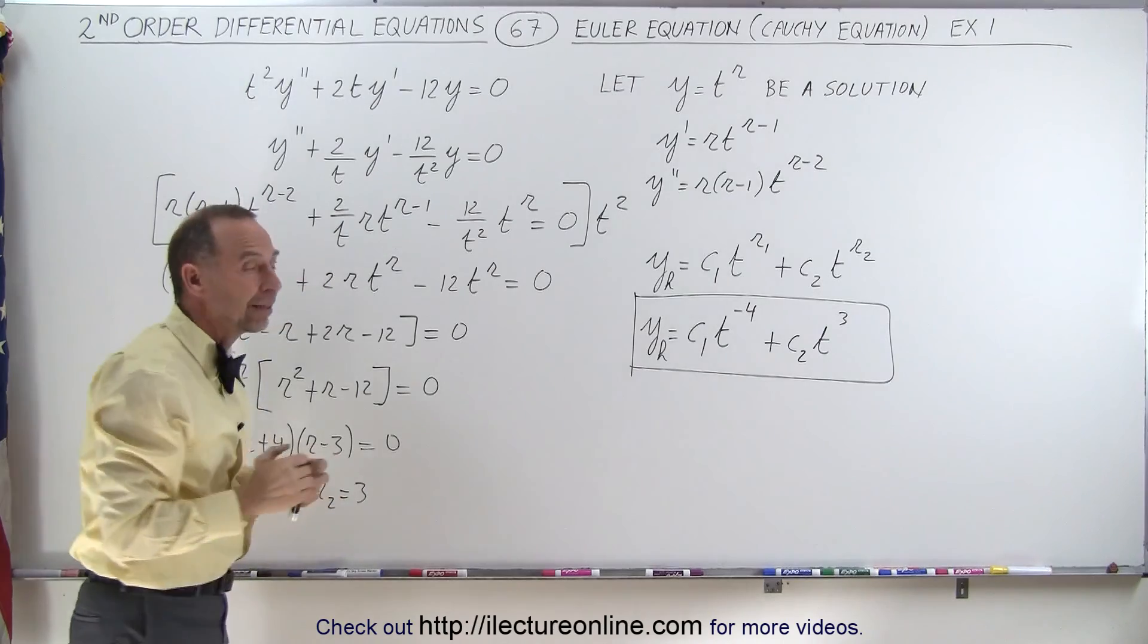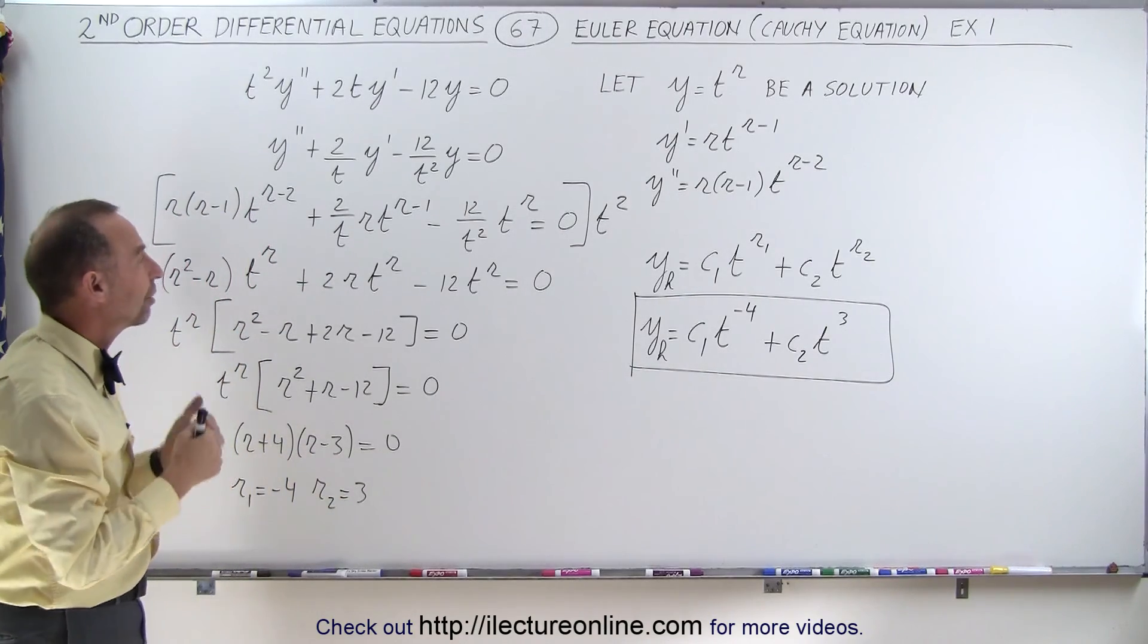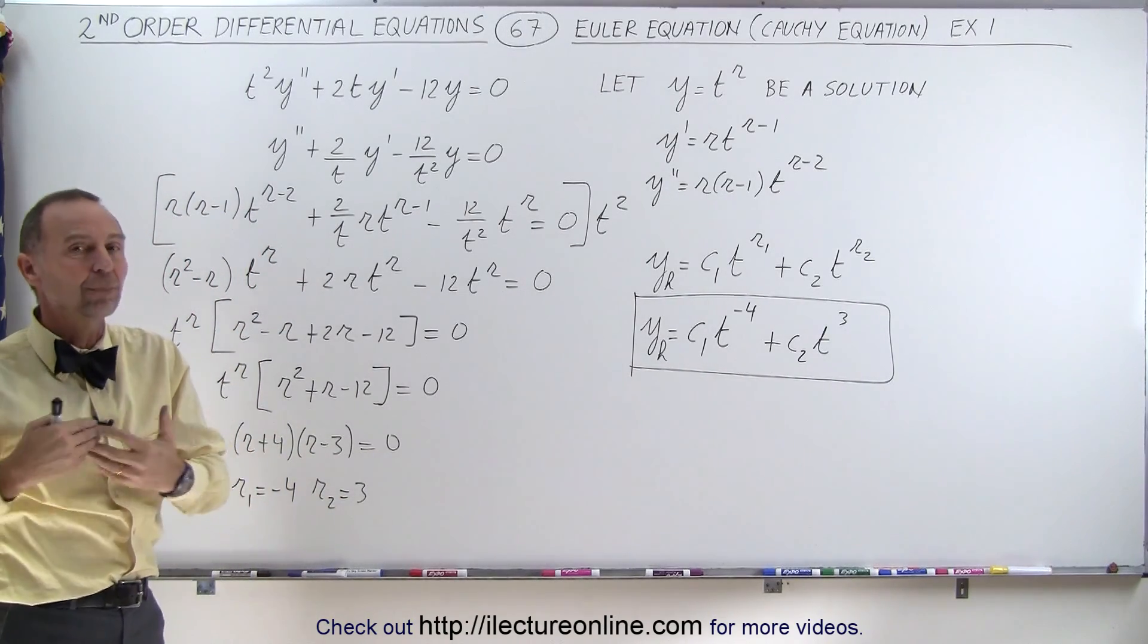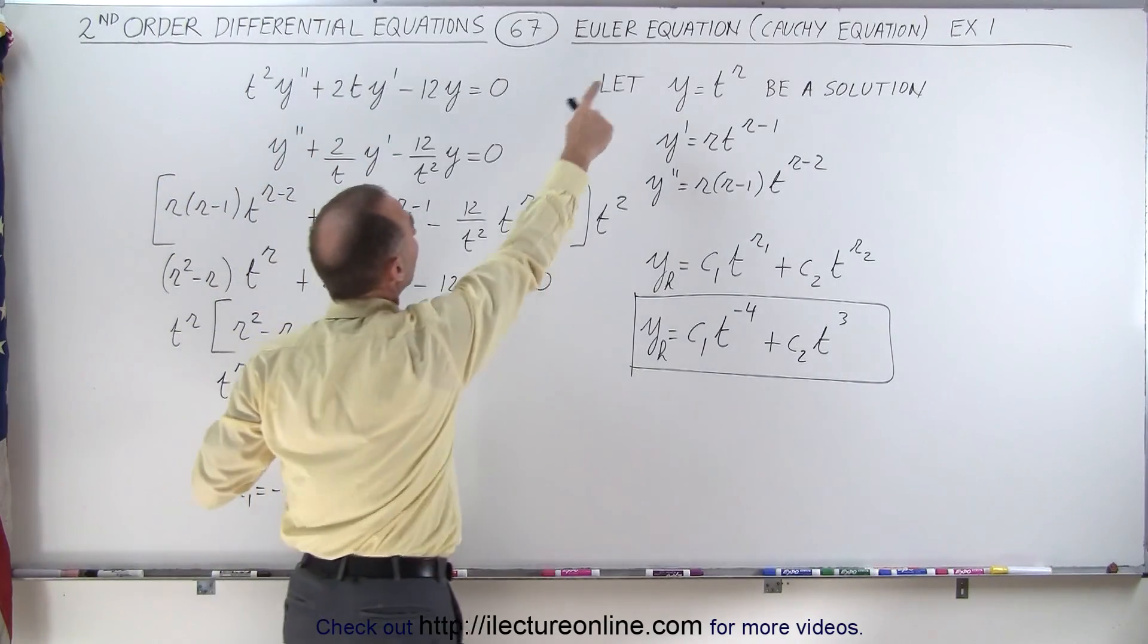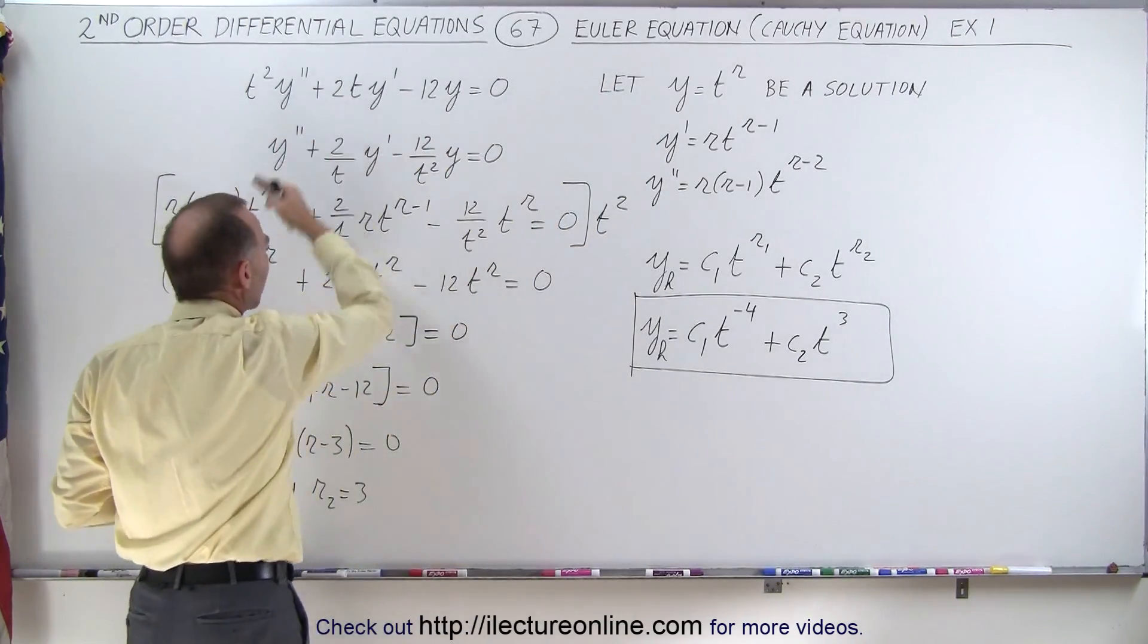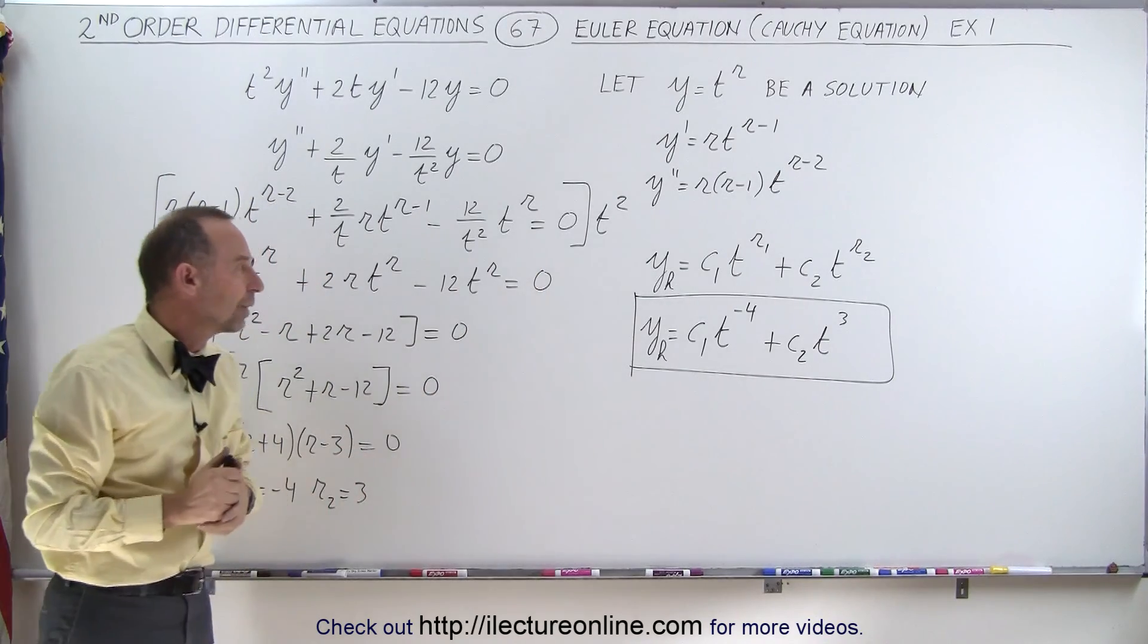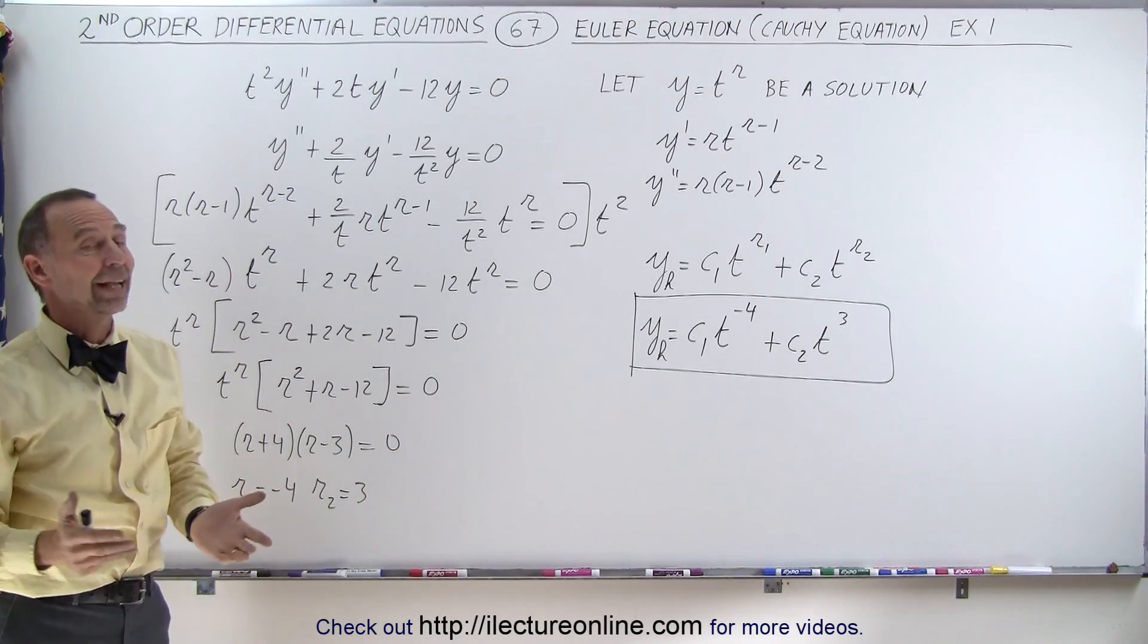And we then recognize that there's different types of equations that will utilize different types of solutions. In this case, this equation is known as the Euler equation, which means we solve it as we have seen here on the board. And that's how it's done.